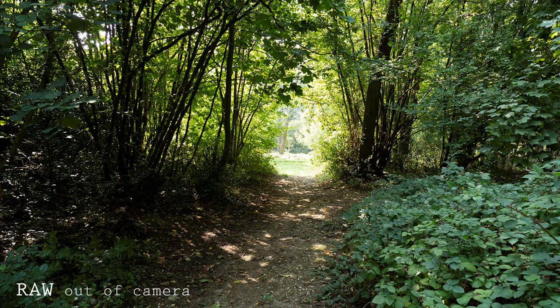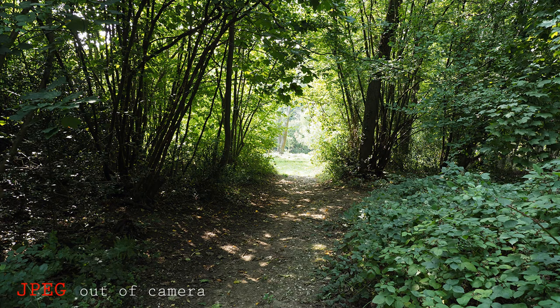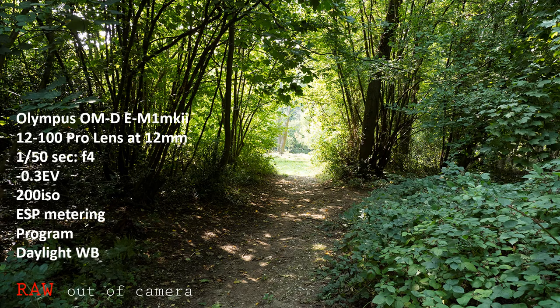Images having a high dynamic range are a challenge for any metering system, such as this shot where the view at the end of the path is much brighter. Saving to raw gives you more flexibility for making corrections. But saving to JPEG, the camera digitally processes the image, and in the process it may not solve the problem of high contrast.